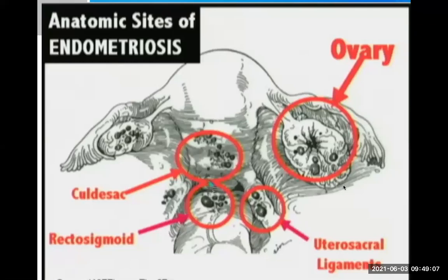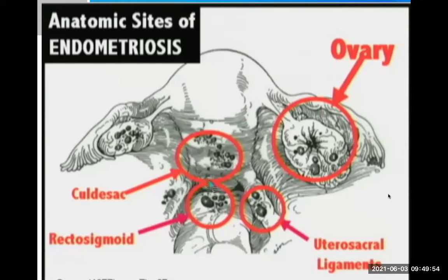Looking at this anatomical picture: the common sites for endometriosis include the ovary, the cul-de-sac or pouch of Douglas, the rectosigmoid area — the junction of sigmoid colon and rectum — and the uterosacral ligament. These are the most common sites. A small question: if endometriosis occurs inside the ovary, what special term do we use for that?